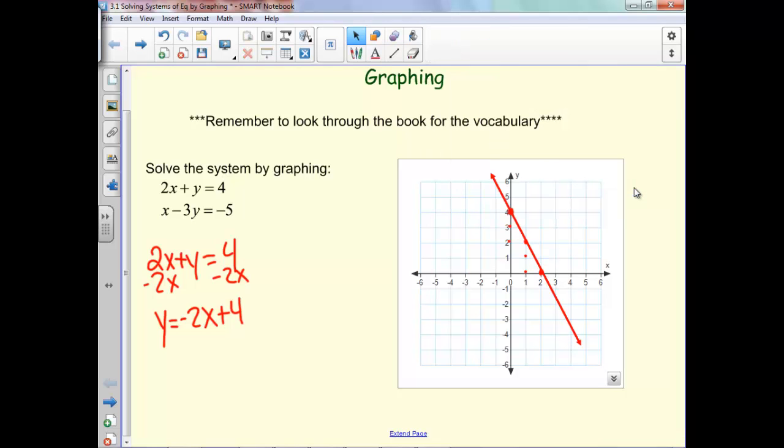So we've got that graph. Now let's look at the second one. We've got x minus 3y equals negative 5, subtract our x over, divide by our negative 3.